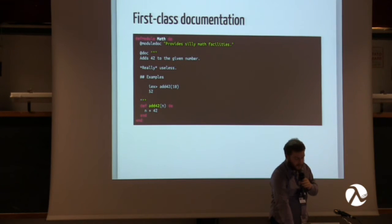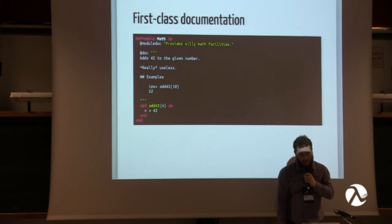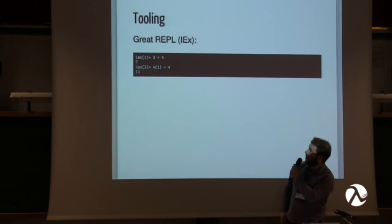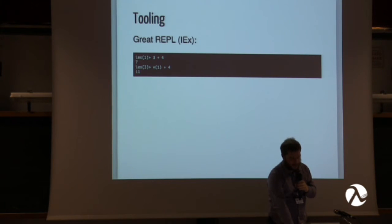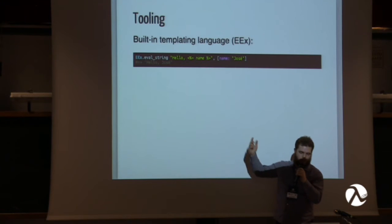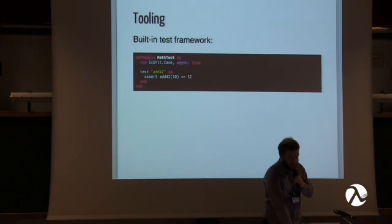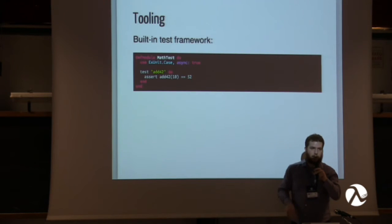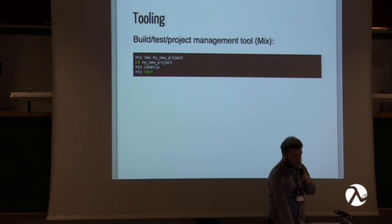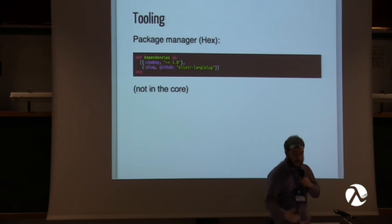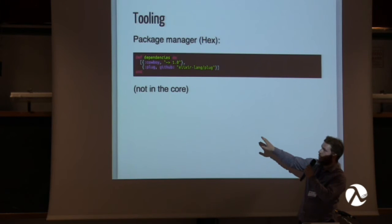Another thing Elixir has over Erlang is tooling. Erlang is known for not having great tooling; Elixir has a lot. It has a great REPL (IEX), a built-in templating language similar to ERB, a built-in test framework with a nice DSL for writing tests, and a built-in build and project management tool you can use to create projects, compile them, test them, and handle dependencies. It also has a package manager that is the standard in the Elixir community, similar to Bundler.